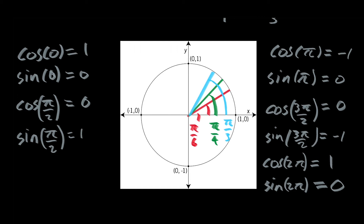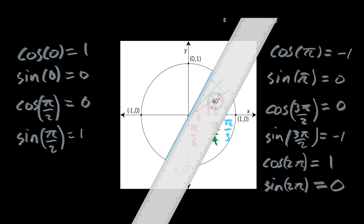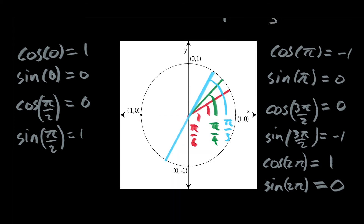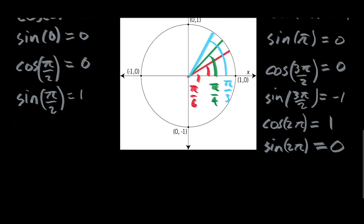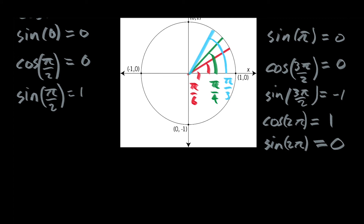These are really the only ones we need to calculate, plus all of their integer multiples. For example, pi over three, then two pi over three, three pi over three is just pi, and four pi over three — that angle going all the way around — these are examples of integer multiples of the special angles. I'll do multiples in the next video, but let's now do the cosine of pi over six.